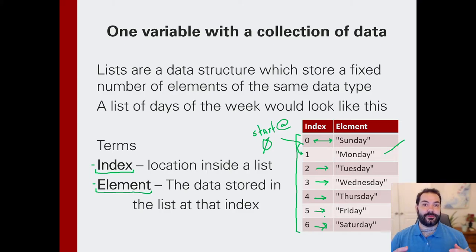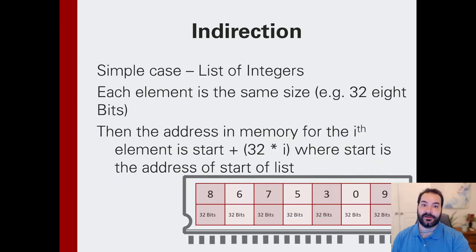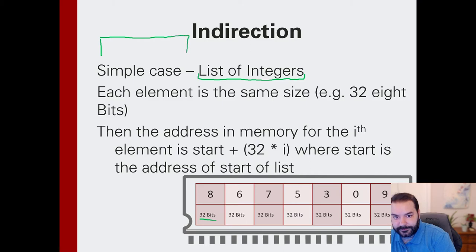But it's now that we have these indices to reference specific spots in memory. Now, we're going to use a very basic case here for a second. Let's just imagine I have a list of numbers: 8, 6, 7, 5, 3, 0, 9. OK, well, each one of those numbers, if we're going super basic, each one of those numbers has or can be represented with 32 bits, if we're thinking about once again physical memory. So just to draw out that memory stick one more time.